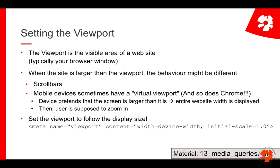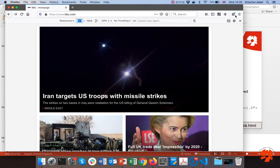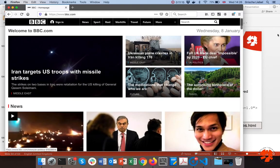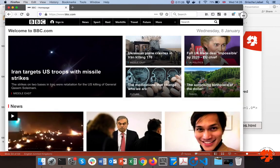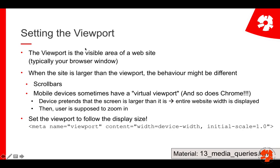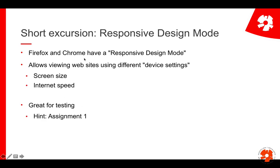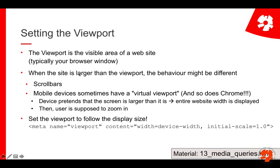One very important concept is the viewport. The viewport is the visible area of a website. For example, you can see a scrollbar on the right side — the viewport is the entire part of the browser window that is currently visible. Everything you can scroll down to is not in the viewport. What happens when the website is larger than the viewport depends on your application — typically you get scrollbars.